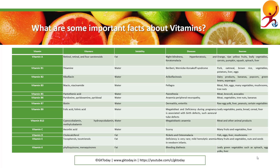Vitamin B9 vitamins are folic acid and folinic acid. It is soluble in water. Deficiency can cause megaloblastic anemia. Deficiency during pregnancy is associated with birth defects such as neural tube defects. It can be found in leafy vegetables, pasta, bread, cereal, and liver.